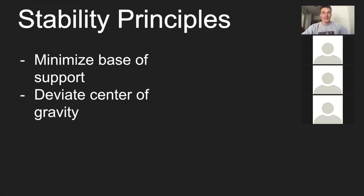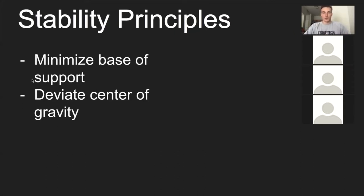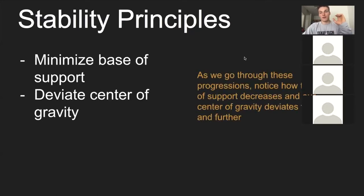For pretty much every human, the center of gravity is about behind the belly button but in front of the spine — roughly halfway through if you were to take an MRI straight through. The only exceptions are extremely tall people, like NBA players nearing seven or eight feet, or people with glandular disorders. For most humans it's right behind the belly button. As we progress, the base of support gets smaller and the center of gravity gets further and further from that base.